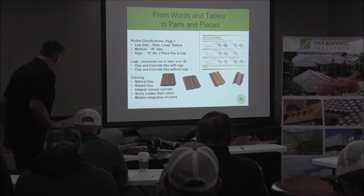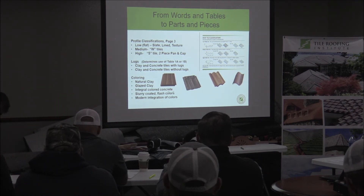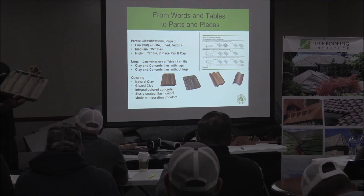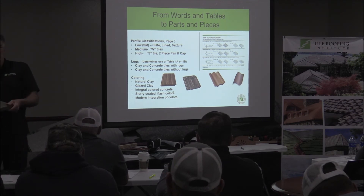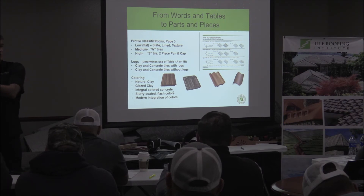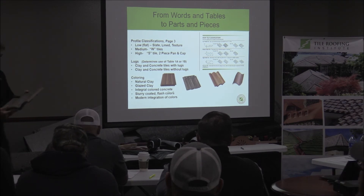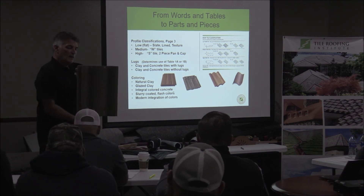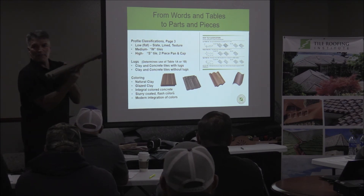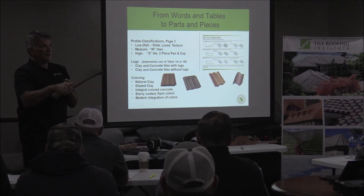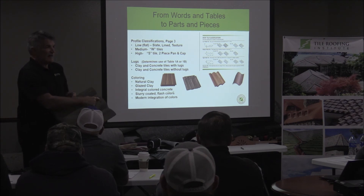Another difference in the tile is that some have lugs and some don't. You can look at this tile — it's got a continuous lug all the way across the top. Some products from different factories will have two individual bumps or lugs on the tile. The medium profile tile — this is a villa profile — you can see the bump there. That's the lug on the top part of the tile, which hooks on the batten and places the nail holes right over the batten if the tile has to be fastened.